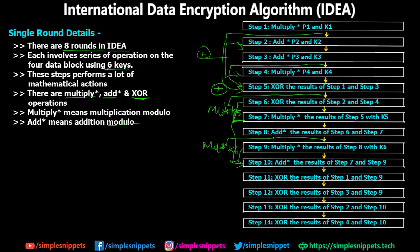I know this looks a bit tedious to remember. If you're a student with network security as a subject and IDEA algorithm in your syllabus, you have to memorize all these 14 steps — there's no other way. You can take a screenshot or draw it in your book. These 14 steps must be carried out in this order for one single round, and this single round is repeated 8 times.